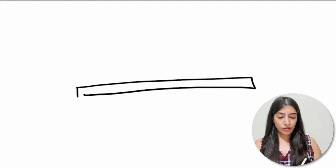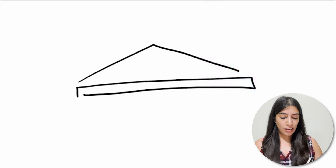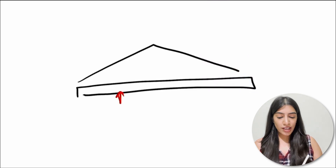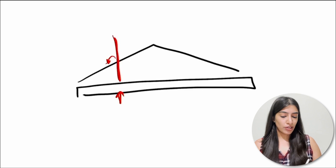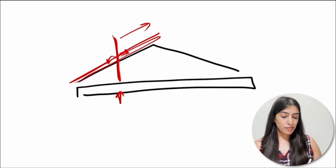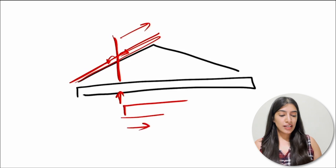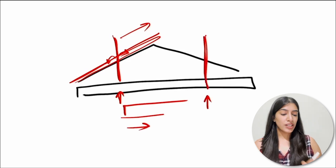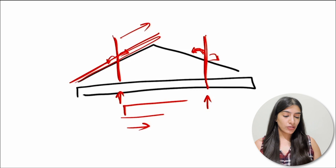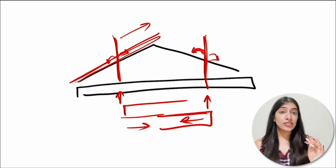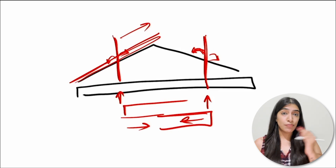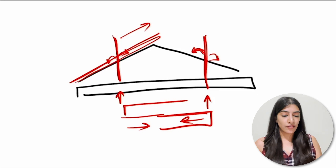Coming back to the question: how do we find the bitonic point? When we are at a particular element and the previous element is smaller and the next element is bigger, we know we are on the increasing side — so the bitonic point is on the right. If the previous element is larger and the next is smaller, we are on the decreasing side — so the bitonic point is on the left. This divide-and-conquer approach is essentially binary search.